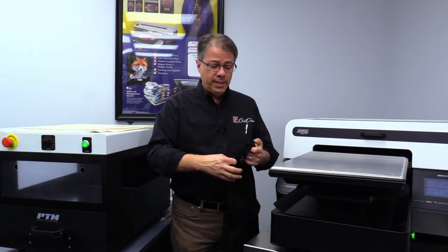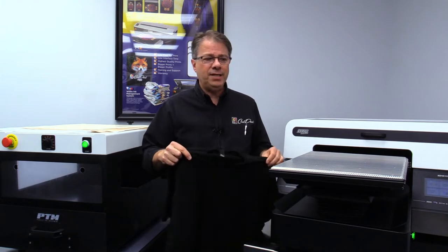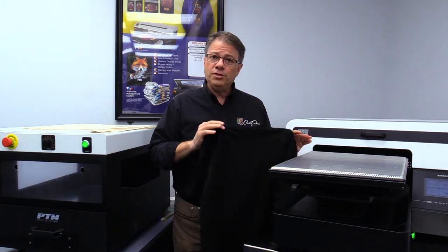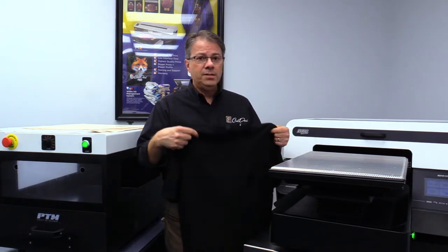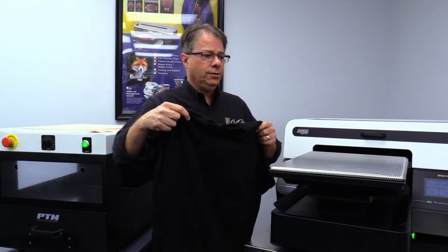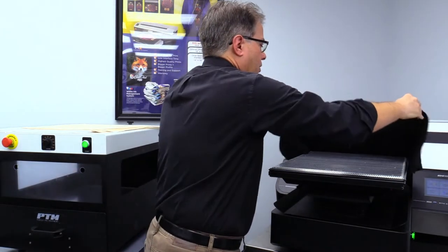First of all, I just want to show you what it does. A vacuum platen is basically how you hoop a shirt to put it into the G4 printer. So all I'm going to do is take the shirt and I'm going to lay it across the top of the printer.